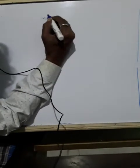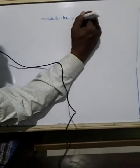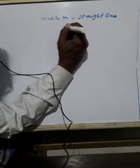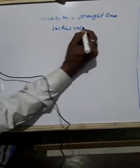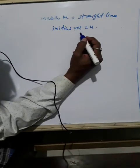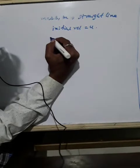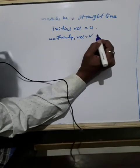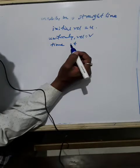Suppose an object of mass m is moving along a straight line with an initial velocity u. It is uniformly accelerated to a final velocity v in time t, by the application of a constant force F throughout that time.